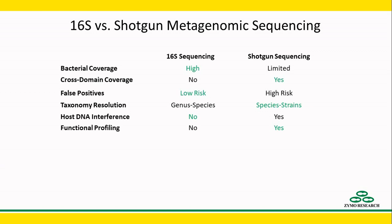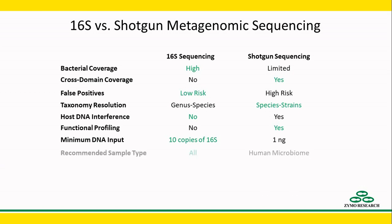We didn't discuss the following points, but they are pretty straightforward. Since 16S library prep is PCR-based, the minimum input required is just 10 copies of the 16S gene. The lowest input required for a shotgun library prep is 1 nanogram of DNA, but this can be higher depending on the kit.